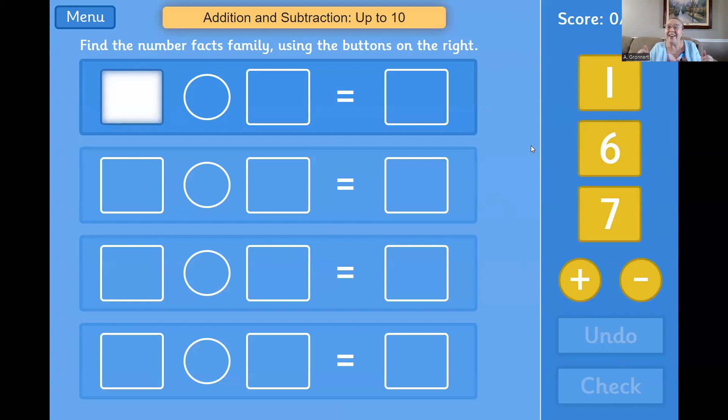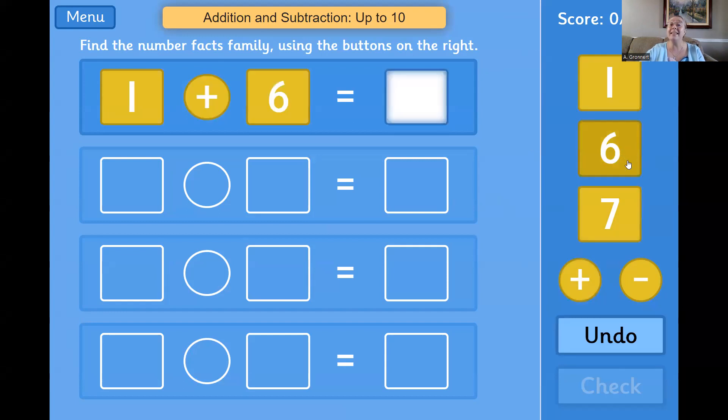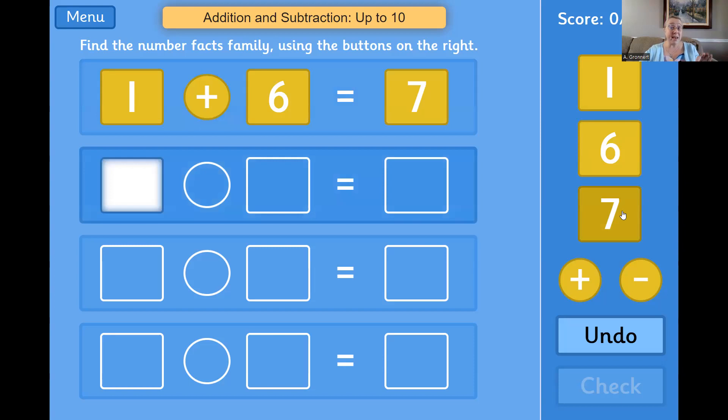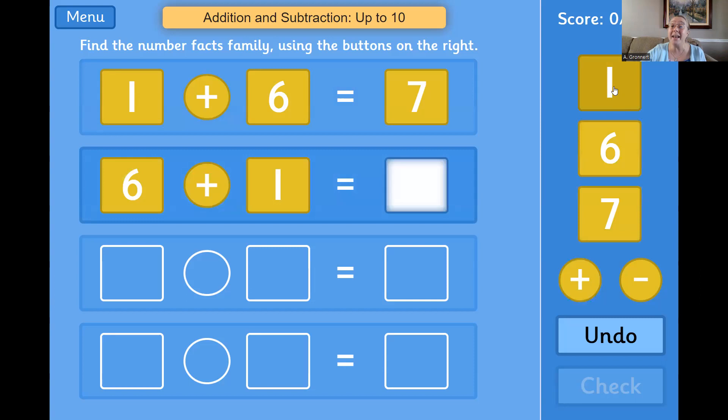That's right. Yeah, we can say 1 plus 6 equals 7. And now I'm going to make the related addition equation. That is, you're right, 6 plus 1 equals 7.